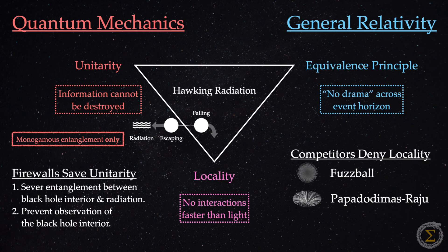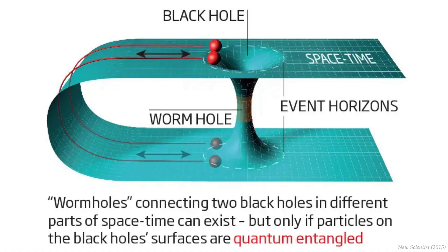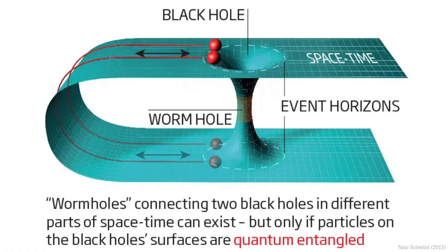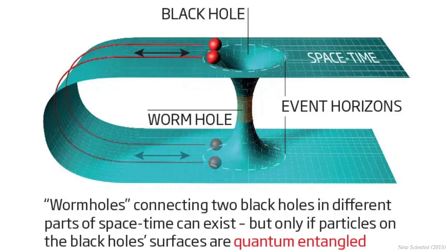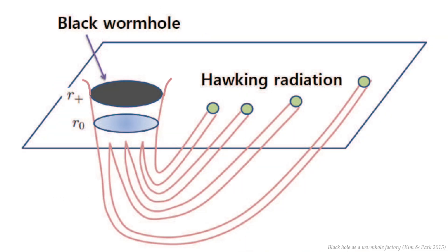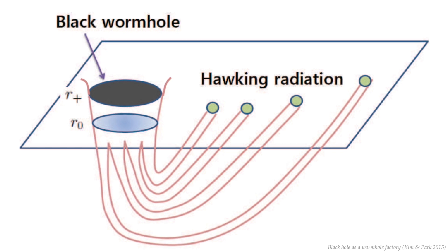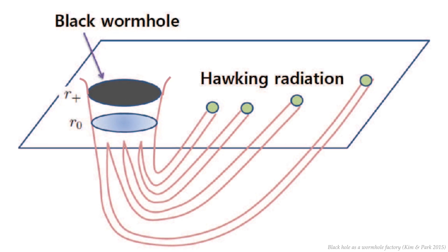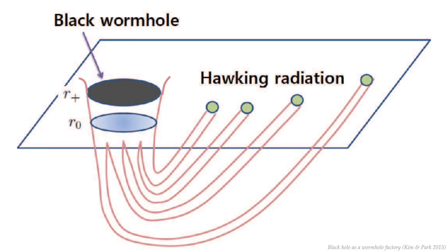Finally, we have the ER equals EPR conjecture by Juan Maldicina and Leonard Susskind. This idea suggests that entangled particles are linked by wormholes, or Einstein-Rosen bridges, hence the name. Outgoing Hawking radiation and infalling particles are viewed as two sides of the same system, connected through hidden wormholes. It's an elegant solution, but requires a radical rethinking of quantum entanglement and spacetime geometry.